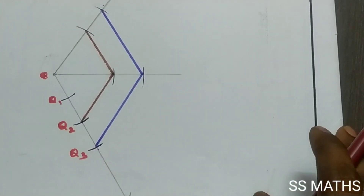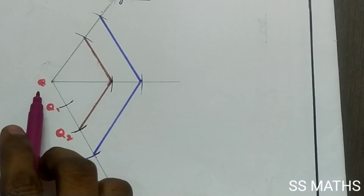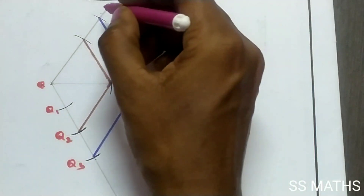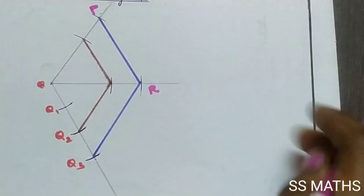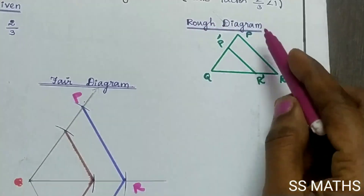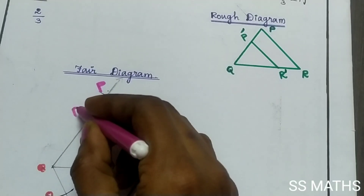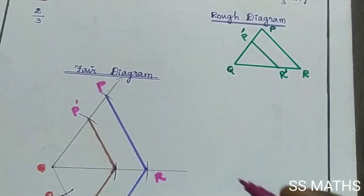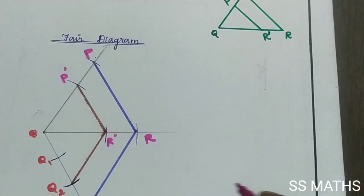Now the base name is Q. The base is P. The base is Q. The base is R. This is the rough diagram. The first name is P dash. The base is P dash. Now R is inside R dash. Next, Q1, Q2, Q3 is finished. This sum is finished.